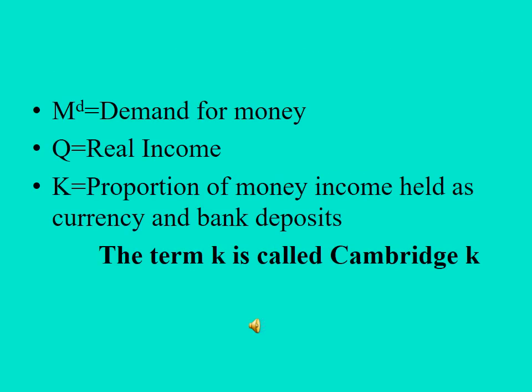In the equation Md = KPQ: Md is the demand for money, Q is the real income, and K is the proportion of money held as currency and bank deposits.